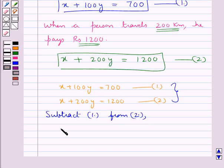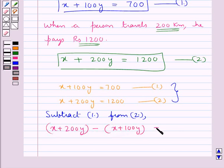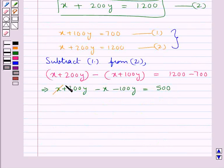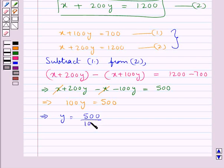Subtracting equation 1 from equation 2: x plus 200y minus x plus 100y is equal to Rs. 1200 minus Rs. 700. This gives us x plus 200y minus x minus 100y is equal to Rs. 500. So we get 100y is equal to Rs. 500, which gives y equal to 500 divided by 100, which is equal to Rs. 5.